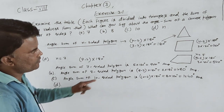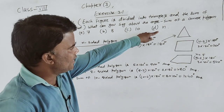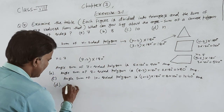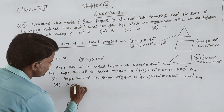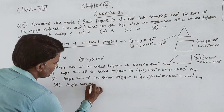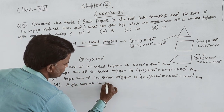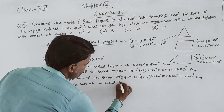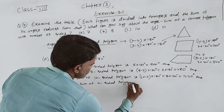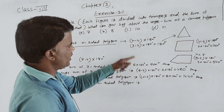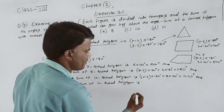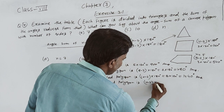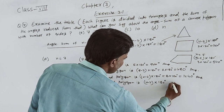Last हमारे पास D part है — N-sided polygon। अब N-sided के लिए formula है: Angle sum of N-sided polygon is N minus 2, multiply 180 degrees।